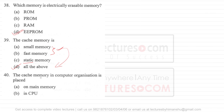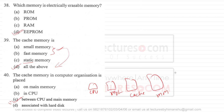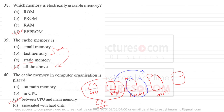Question 40: cache memory in computer organization is placed between CPU and main memory. The structure is: CPU, then registers, then cache memory, then main memory, then secondary memory. Sometimes registers and CPU are combined into one single unit. So the answer to this question is option C — cache memory is between CPU and main memory.